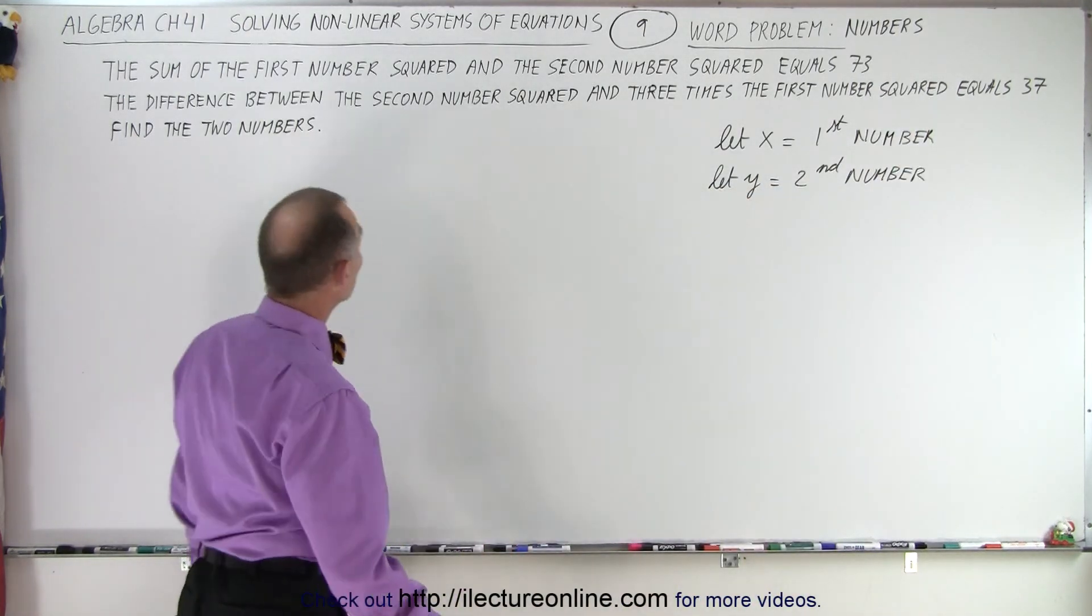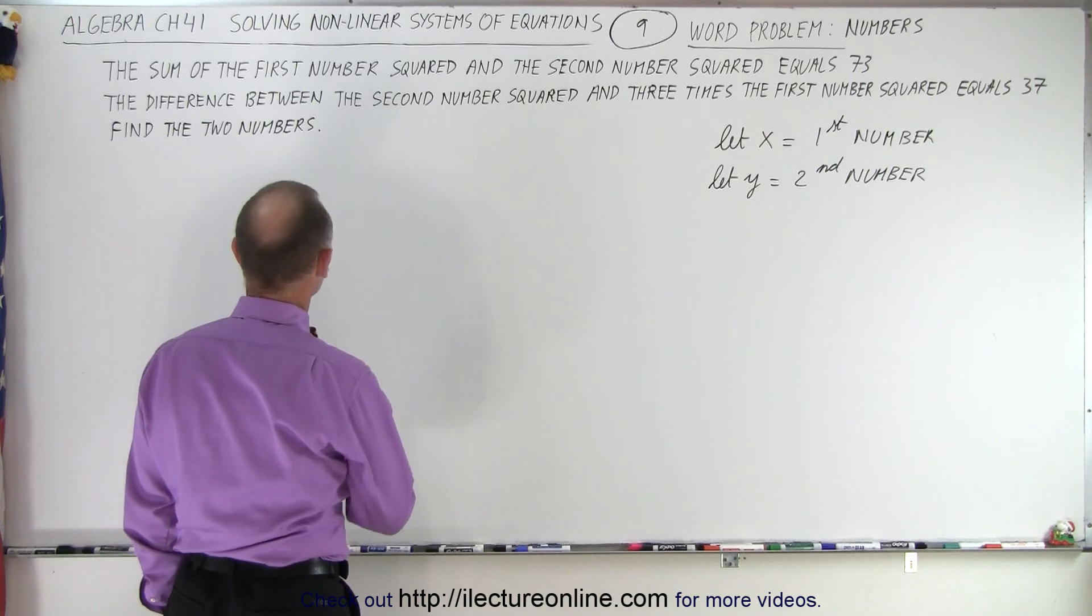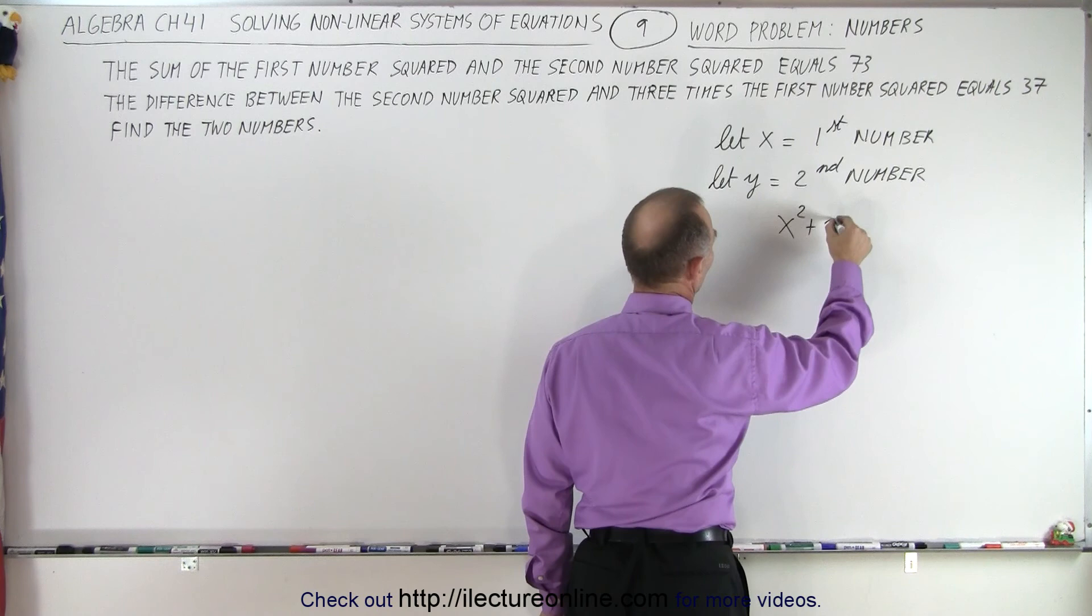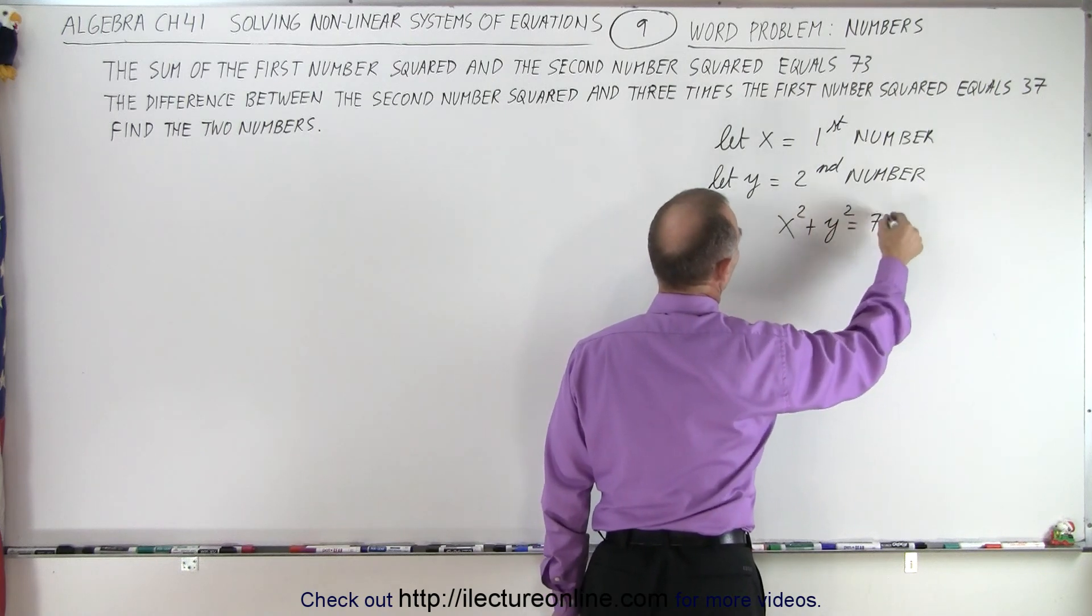Now, the relationships. The sum of the first number squared and the second number squared equals 73. So that means x squared plus y squared equals 73.